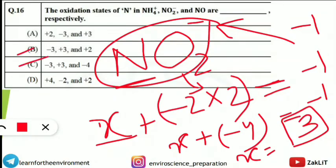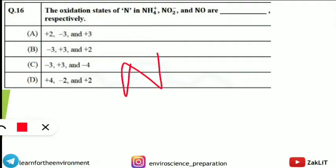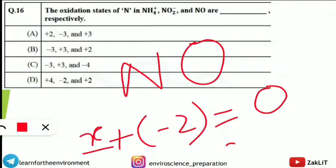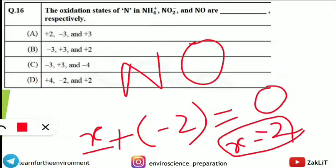For NO: since no charge is given, the overall charge is 0 (neutral). Oxygen's oxidation state is -2. Writing: X + (-2) = 0, so X = +2. Therefore, the oxidation states of nitrogen in NH4+, NO2-, and NO are -3, +3, and +2 respectively. The correct option is the one showing -3, +3, +2.